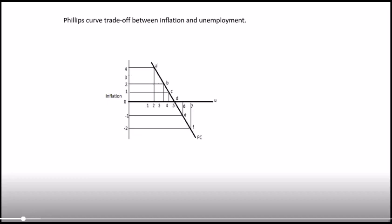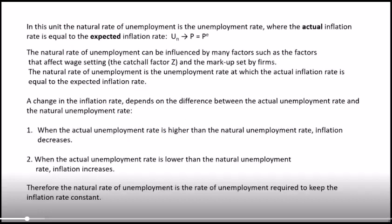Beyond 5% unemployment, at an unemployment rate of 6%, you now have negative inflation. Negative inflation is also very dangerous — it could lead to a deflation spiral with serious consequences. That's just a bit of important theory.